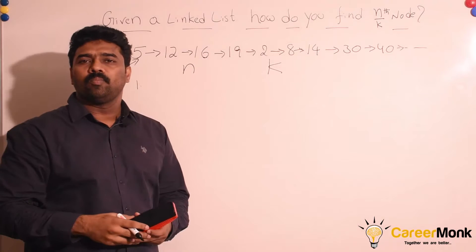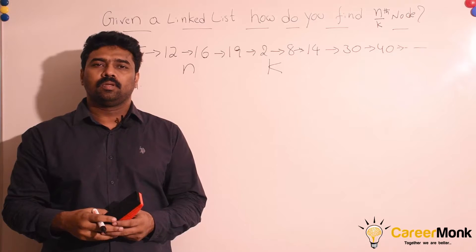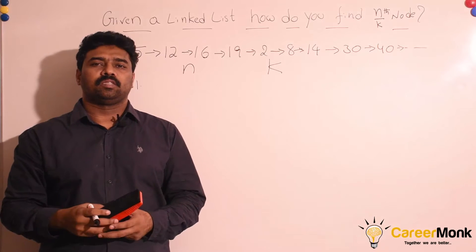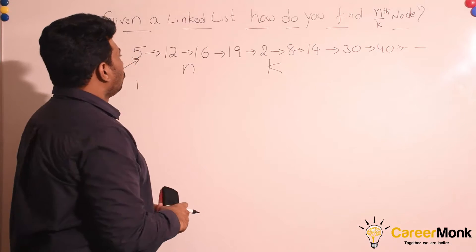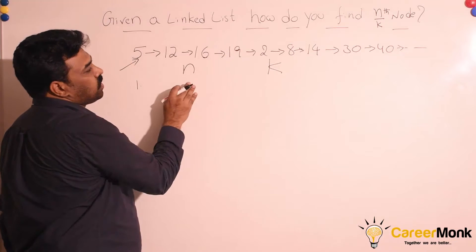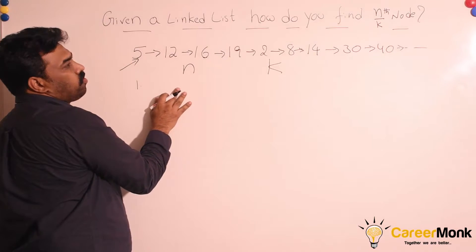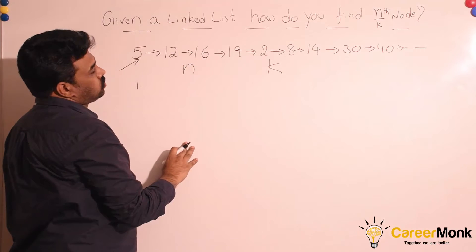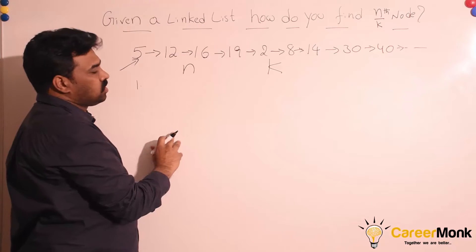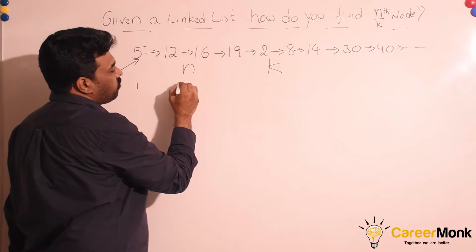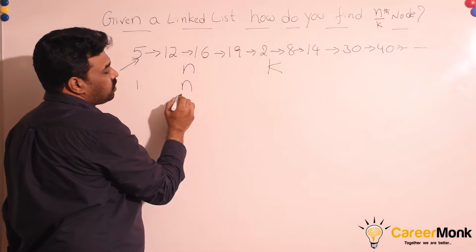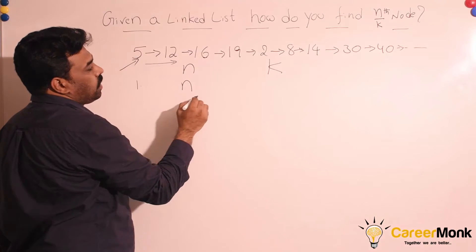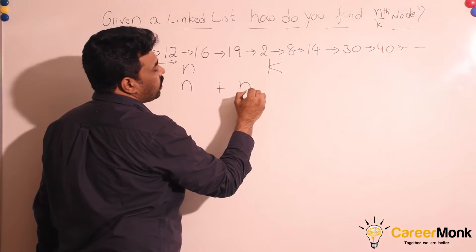Let us enumerate all possible solutions for this problem with different data structures. To find the n/kth node of the linked list, first we need to find n — that means the length of the linked list. The obvious solution is: first we do a traversal to find the length of the linked list, and then another traversal for finding the n/kth node.